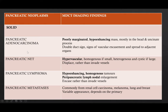Coming to the MDCT imaging findings in each case: pancreatic adenocarcinomas present as poorly marginated hypoenhancing masses mostly located in the head and uncinate process. They show the double duct sign, which is dilatation of the MPD as well as the CBD, signs of vascular encasement and spread to adjacent organs. Pancreatic neuroendocrine tumors are hypervascular, presenting as homogeneous masses if small and heterogeneous cystic masses if large; they displace rather than invade vessels. Pancreatic lymphomas present as hypoenhancing homogeneous tumors with associated peripancreatic lymph nodal enlargement and encase rather than invade vessels. Pancreatic metastases have a variable appearance depending on the primary, commonly arising from renal cell carcinomas, melanomas, lung carcinomas, and breast carcinoma.